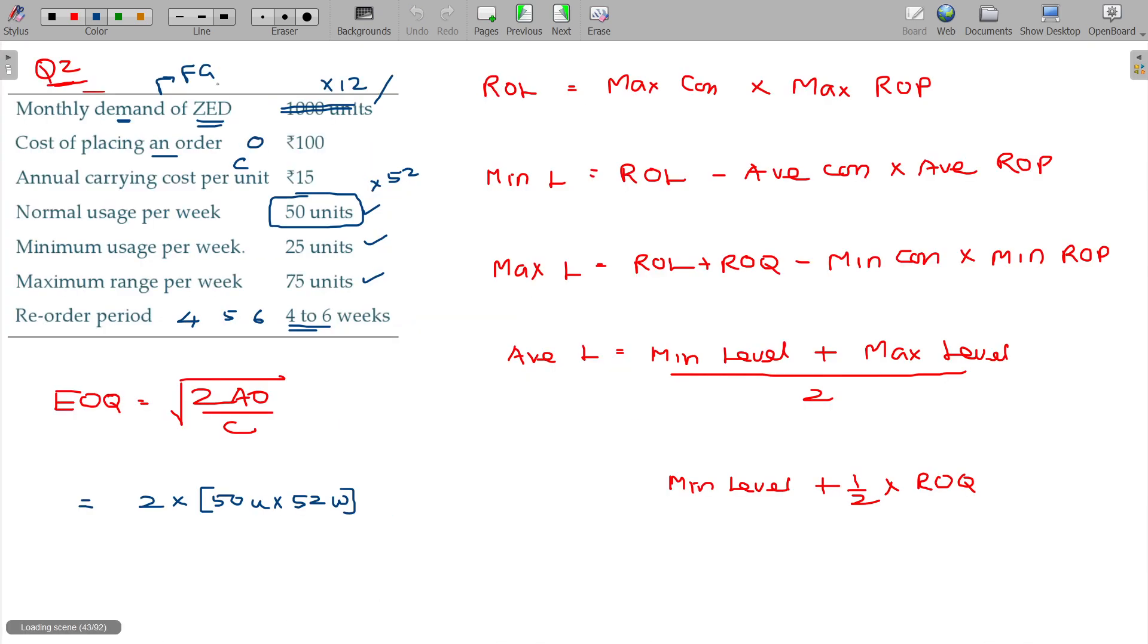2,600 will be taken here. Okay, into ordering cost being 100 and carrying cost being 15. Okay, then EOQ being, what is the EOQ? 1,186.